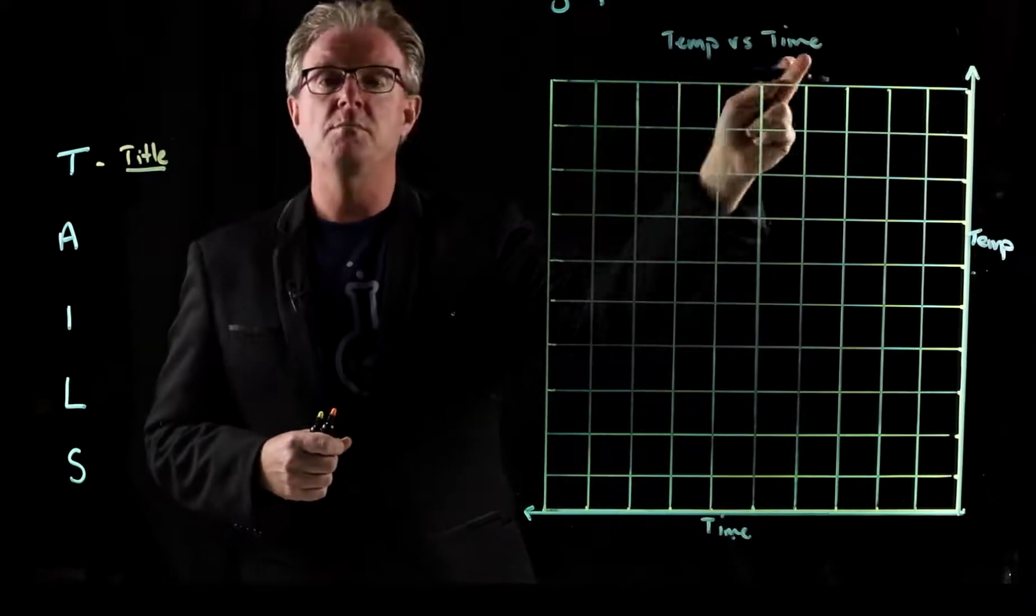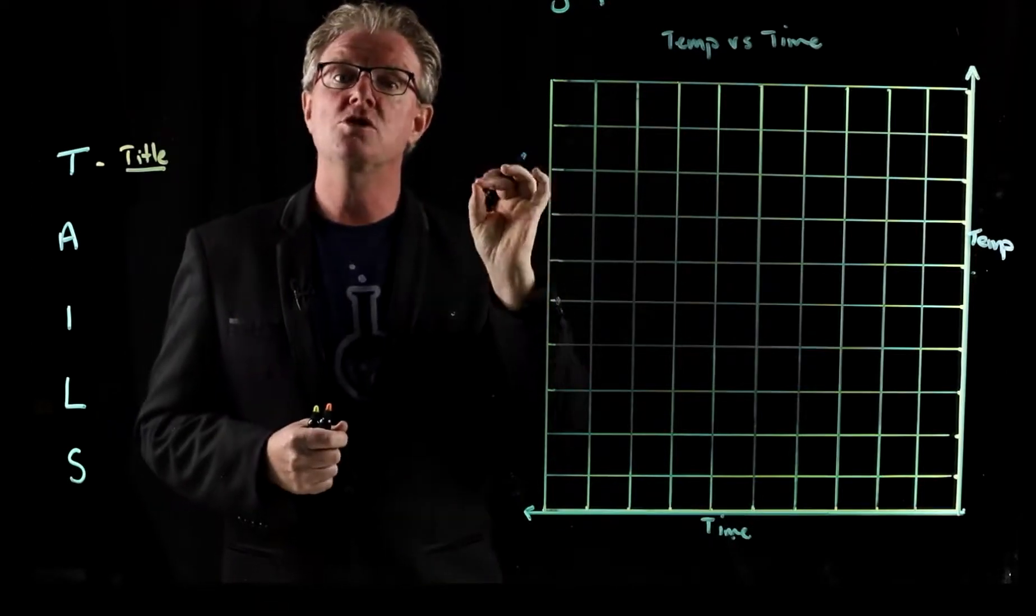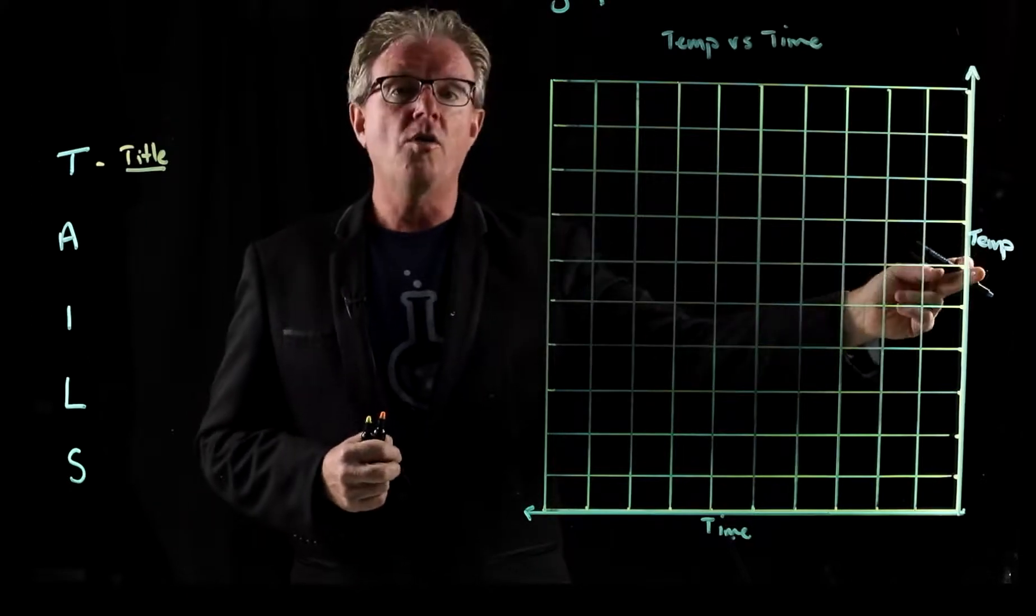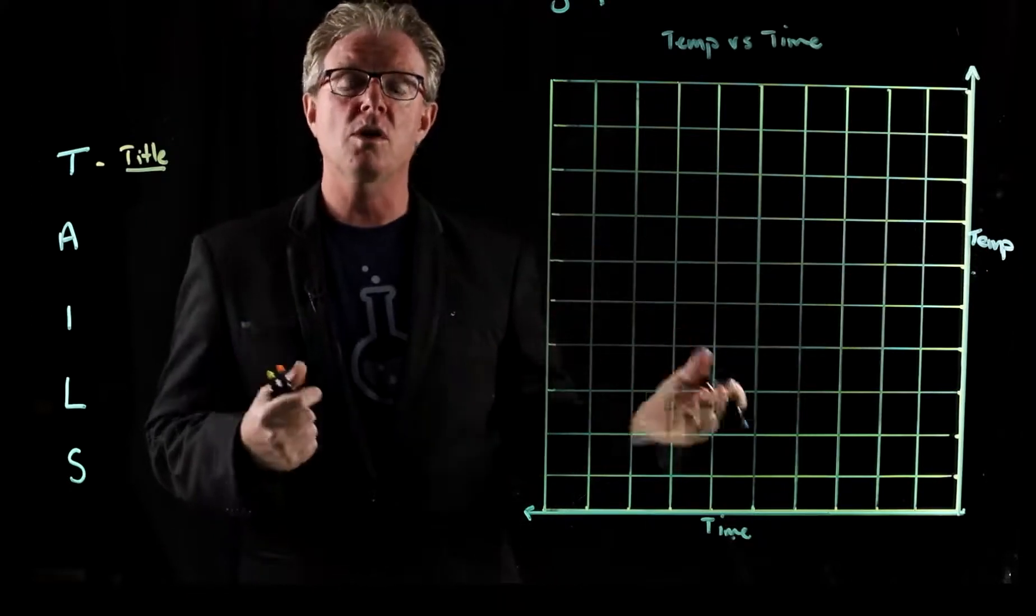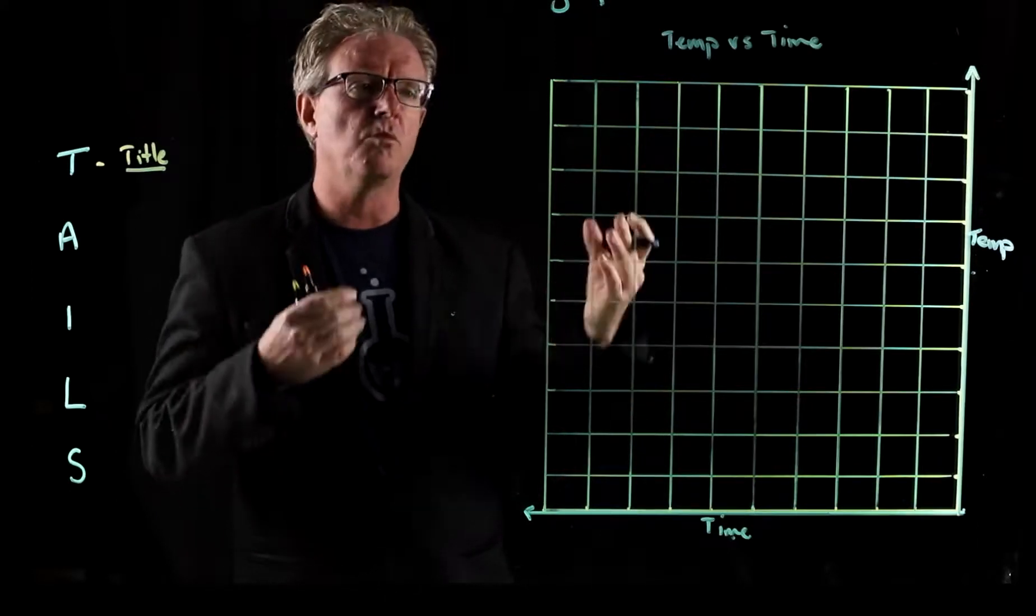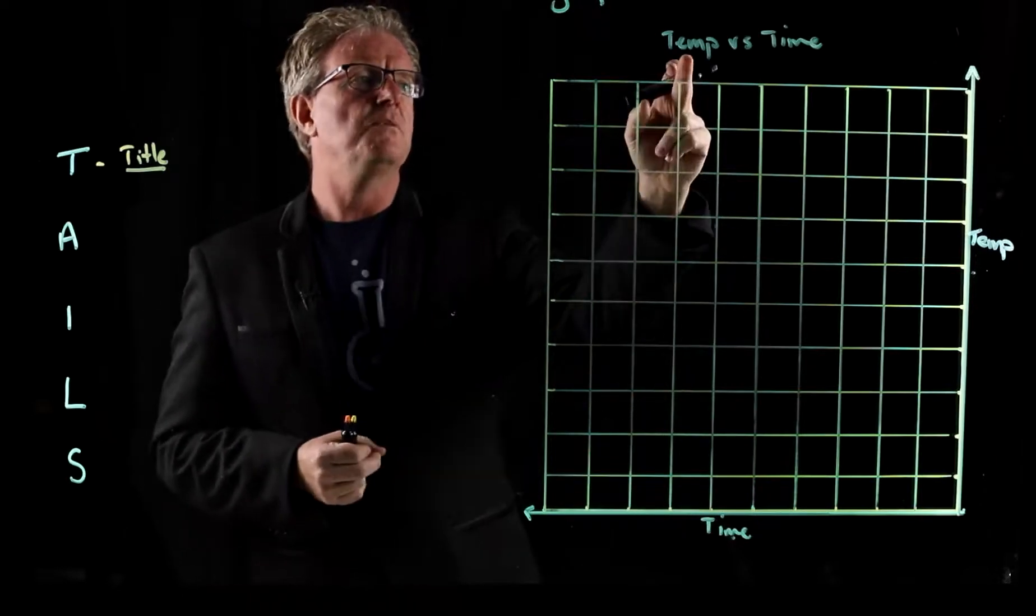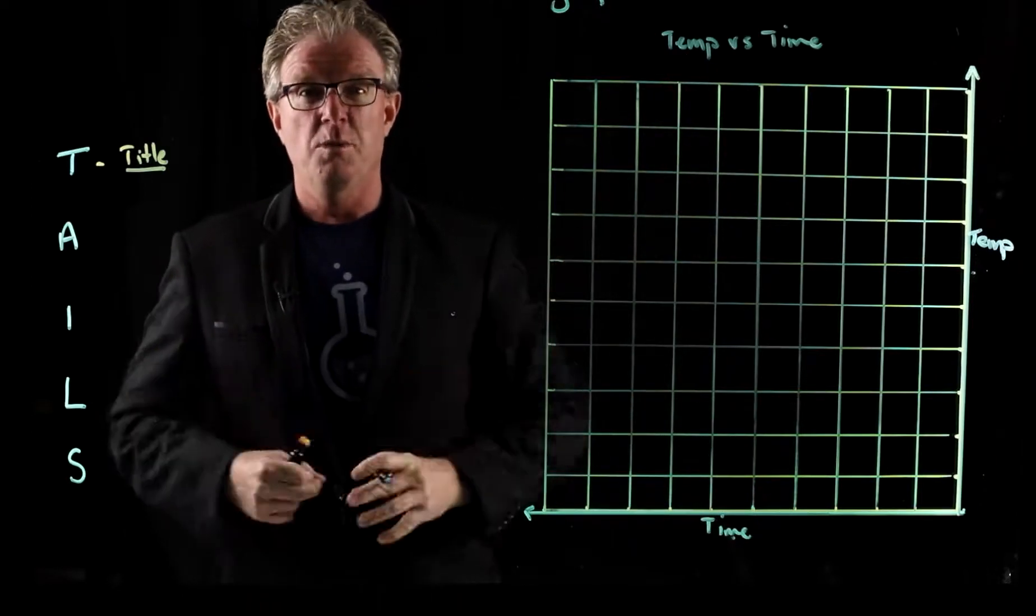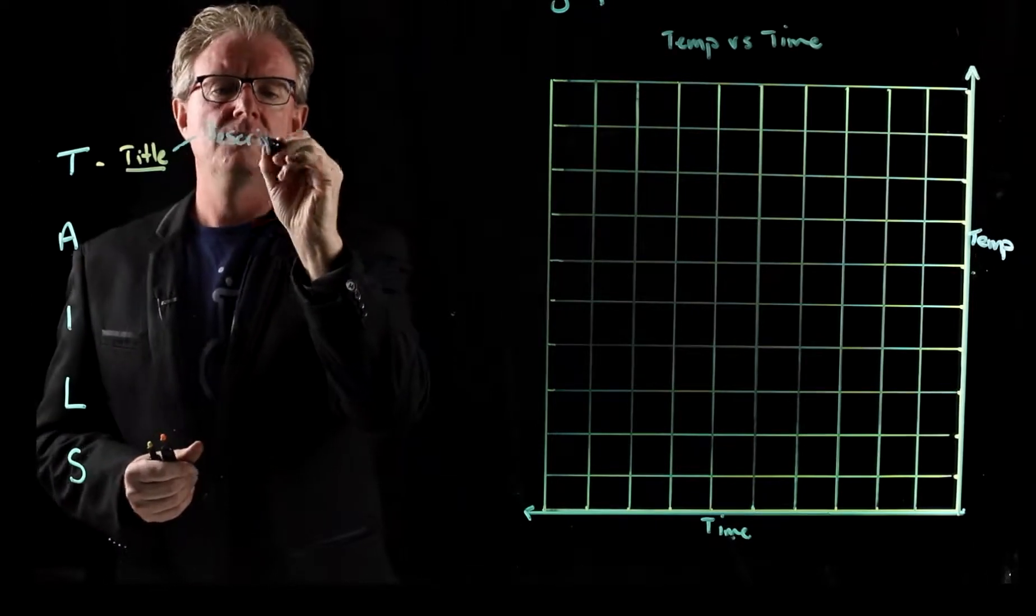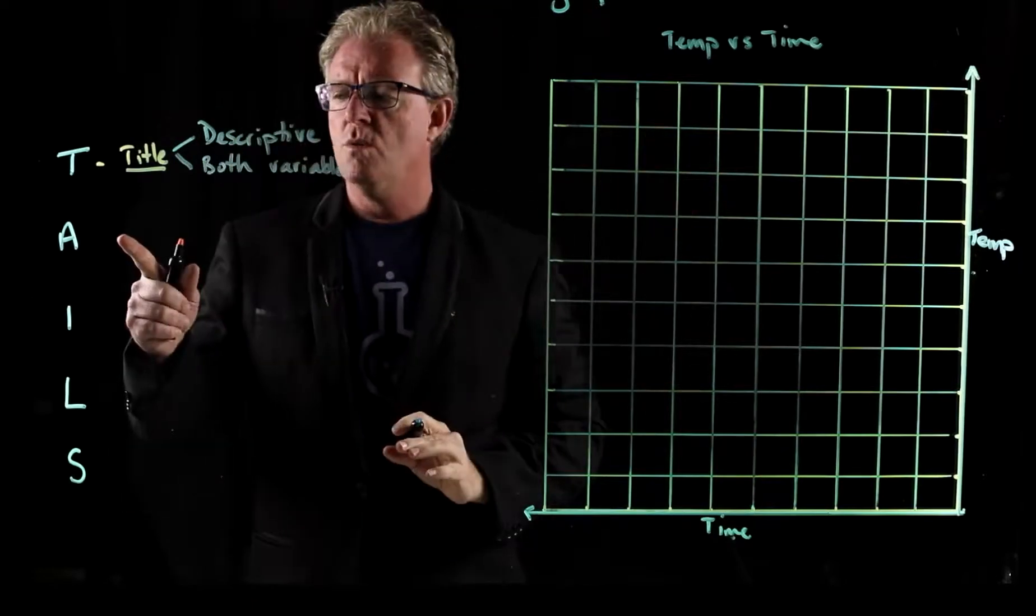Yes, it does have both variables there, but we need to make it a detailed heading. We need a little bit more description. And so if I said the temperature change of 100 mils of fresh water over 10 minutes, that's going to give me a lot more data, a lot more information from that graph. So temperature versus time is not the most descriptive. So with your titles, they need to be descriptive. They need to have both variables in there.